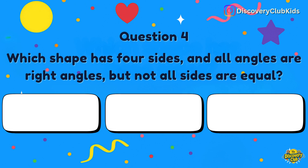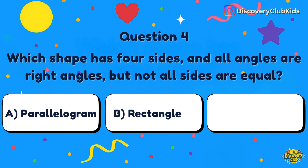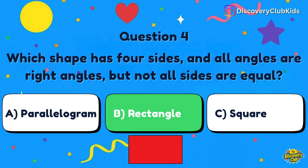Question number 4: Which shape has four sides, and all angles are right angles, but not all sides are equal? Your choices are parallelogram, rectangle, or square. The answer is rectangle.